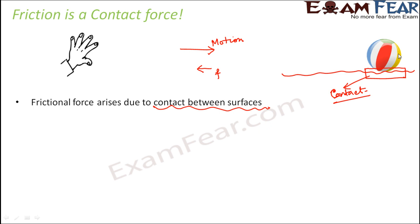You might ask: what if I throw the ball in the air — will it still experience the force of friction? Yes, because when you throw it in the air, the ball is now in contact with the air, and air also exerts a force of friction. So in order to experience friction, the two surfaces need to be in contact with each other, and therefore friction is a contact force.